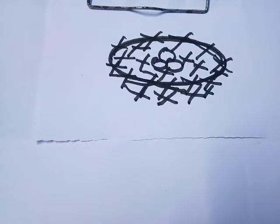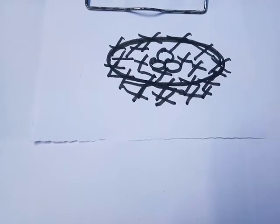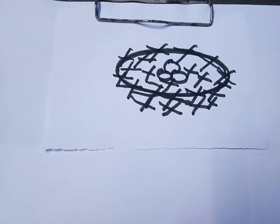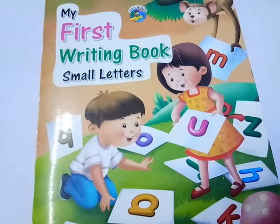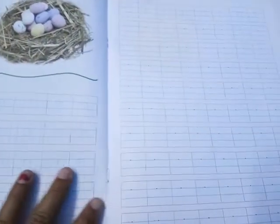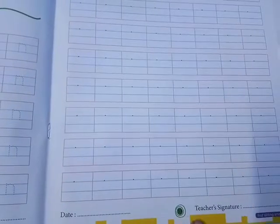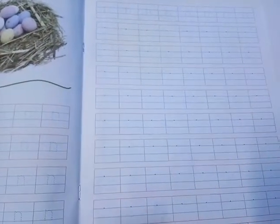The next thing you will do today is writing N sound without dots in your textbook. You will take your book — My First Writing Book, small letters — and then take out page 33. Which number? 33. You will do this page in your textbook and you will write the N sound without dots.